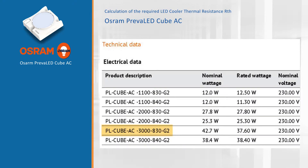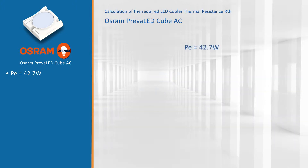In the datasheets you can see that this model has a nominal wattage of 42.7 watts. Since it is an AC module, there is an internal AC to DC driver, which makes the total efficiency slightly lower than the DC variation of this module. About 75% of this power actually goes to heat in this case. So we have to dissipate away 32 watts.